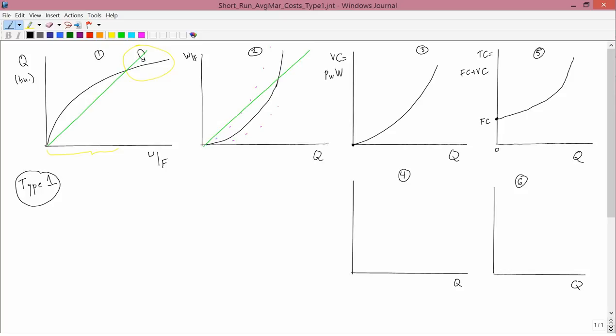We see here the graphs from the previous lesson. The only thing I've changed is the numbering in the upper right-hand graph. I changed that to 5, and I've drawn two graphs on the second row, labeled one of them 4 and one of them 6.